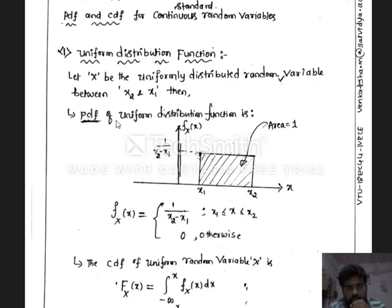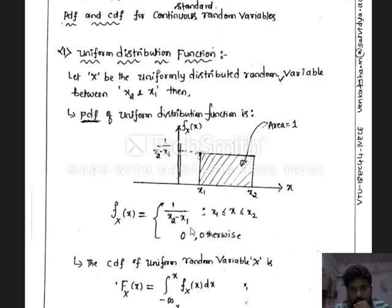Let us define what is a uniform random variable. Let x be the uniform random variable which is uniformly distributed between x1 and x2. Then the PDF of the uniform distribution function is defined as f_x(x) equal to 1 divided by (x2 minus x1) in the limits x1 to x2. If x1 equals a and x2 equals b, then f_x(x) becomes 1 divided by (b minus a), and it is 0 for any other values of x.